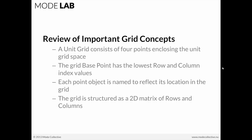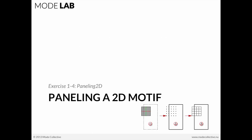Each point object is named to reflect its location in the grid. The grid is structured as a 2D matrix of rows and columns, and the position is reflected within the naming convention of every point. This is how things are connected — this is how you're able to then panel. These points in the grid do have X, Y, Z coordinates, but tacked onto that coordinate is its specific name.